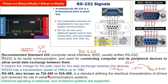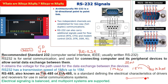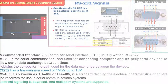RS-485 is also known as TIA-485 and EIA-485. TIA and EIA are the names of the institutions. This is a standard defining the electrical characteristics of drivers and receivers for use in serial communication systems. RS-485 comes with balanced electrical signaling, and importantly, multipoint systems are supported — you can connect multiple systems in a multi-drop configuration.